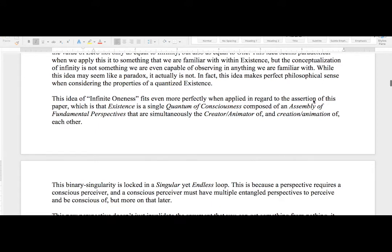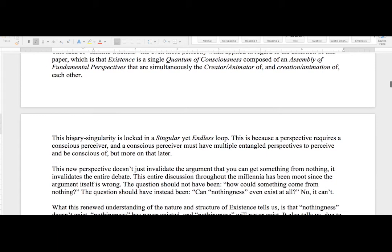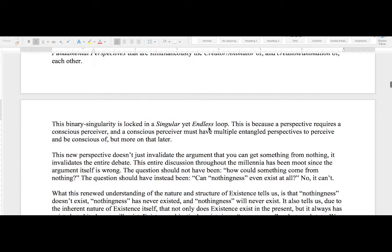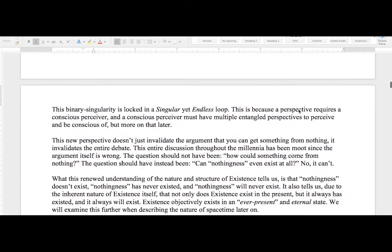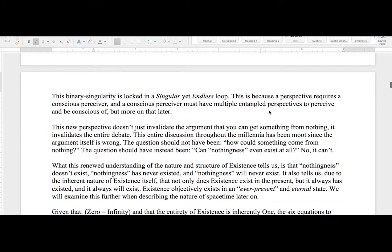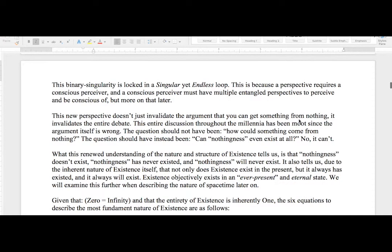Which is that existence is a single quantum of consciousness composed of an assembly of fundamental perspectives that are simultaneously the creator/animator of and the creation/animation of each other. This binary singularity is locked in a singular yet endless loop. This is because a perspective requires a conscious perceiver. A conscious perceiver must have multiple entangled perspectives to perceive and be conscious of, but more on that later. This new perspective doesn't just invalidate the argument that you can get something from nothing—it invalidates the entire debate.